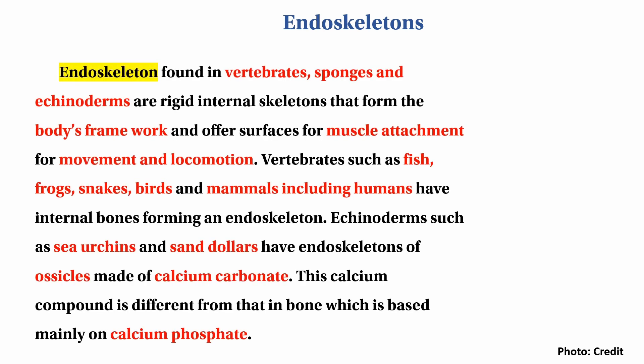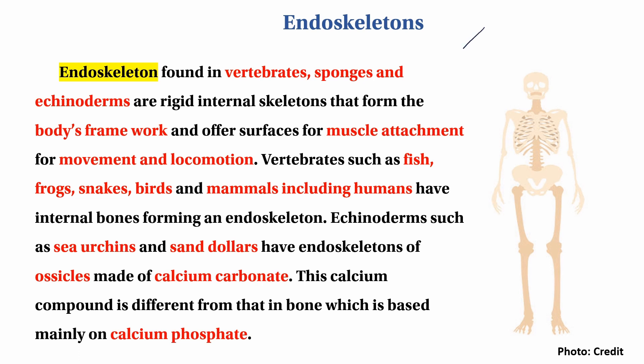The endoskeleton system is an internal skeleton. The endoskeleton is found in animals with bone, such as sponges and echinoderms.